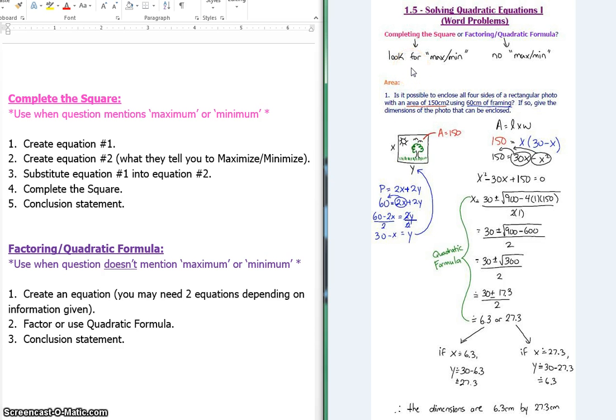Is it possible to enclose all four sides of a rectangular photo with an area of 150 centimeters squared, using 60 centimeters of framing? If so, give the dimensions of the photo that can be enclosed. So I don't see anything that says max or min anywhere, which means I'll probably be using the factoring or quadratic formula method.